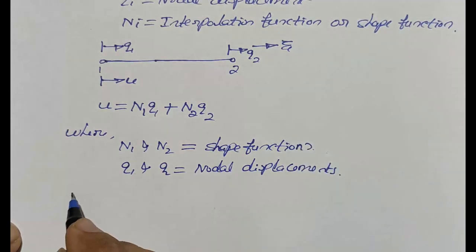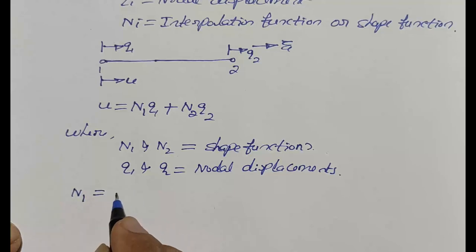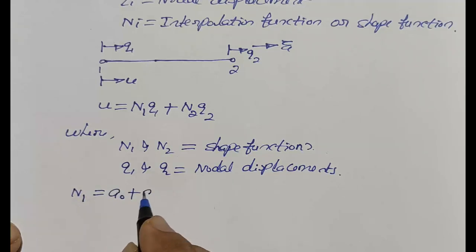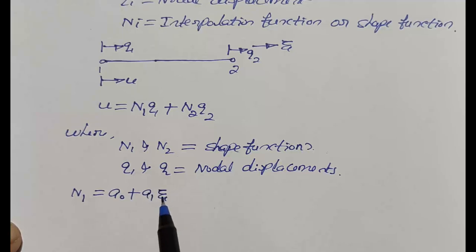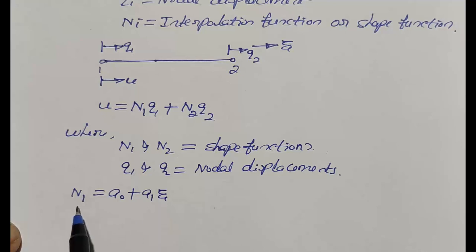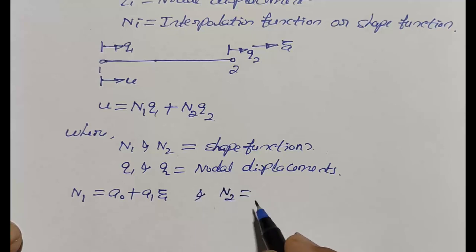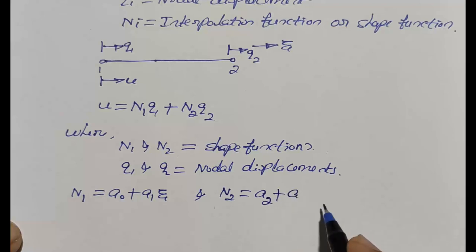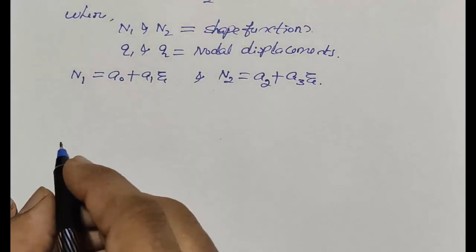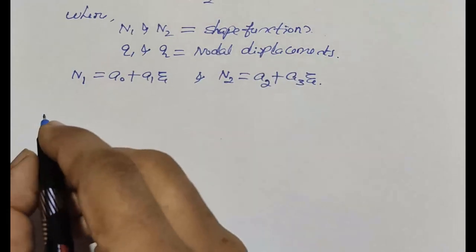Therefore, N1 = a0 + a1*ζ and N2 = a2 + a3*ζ. Here, in place of x we use zeta (ζ) because we are considering this in the natural coordinate system. Next, the properties of shape function.